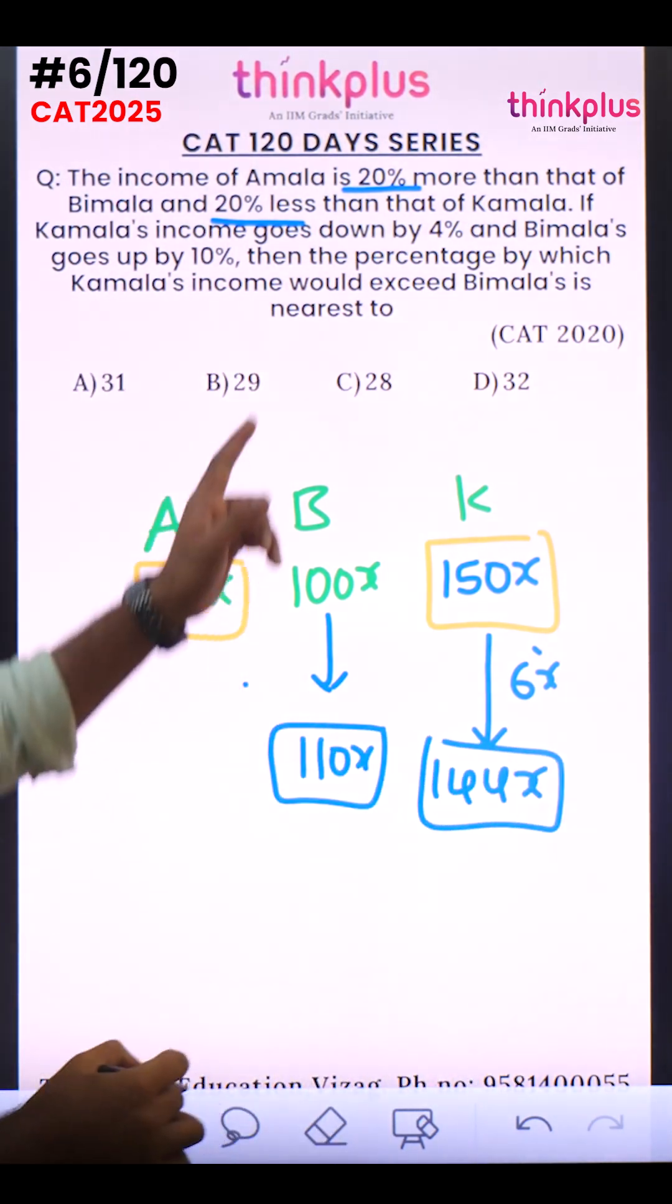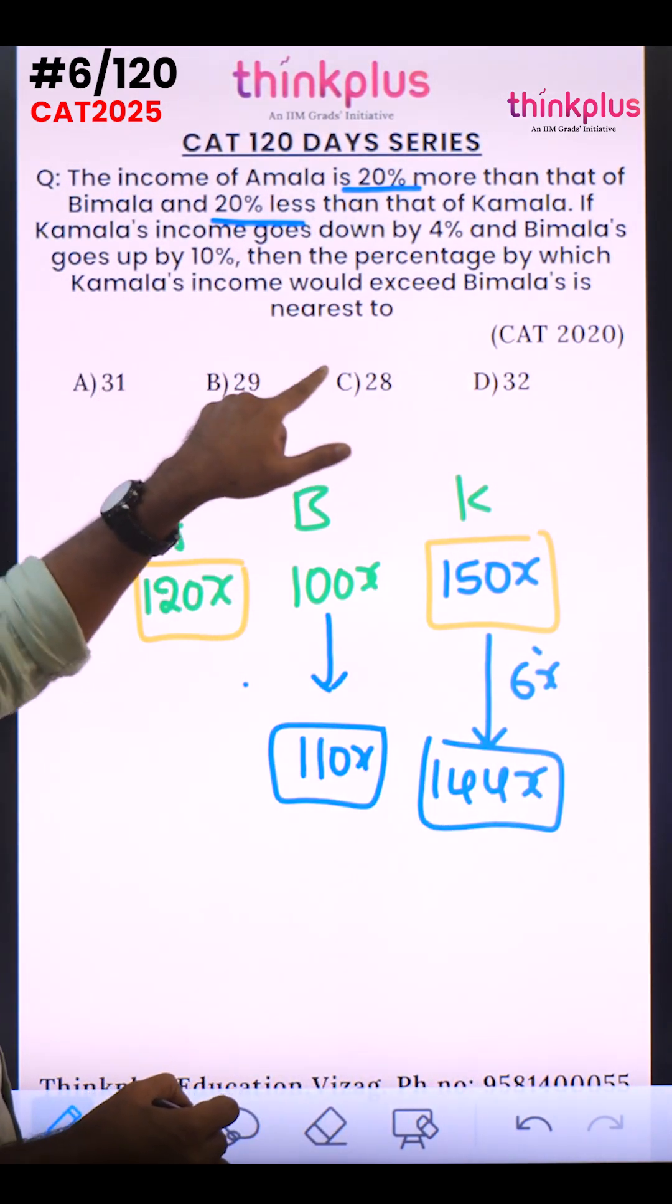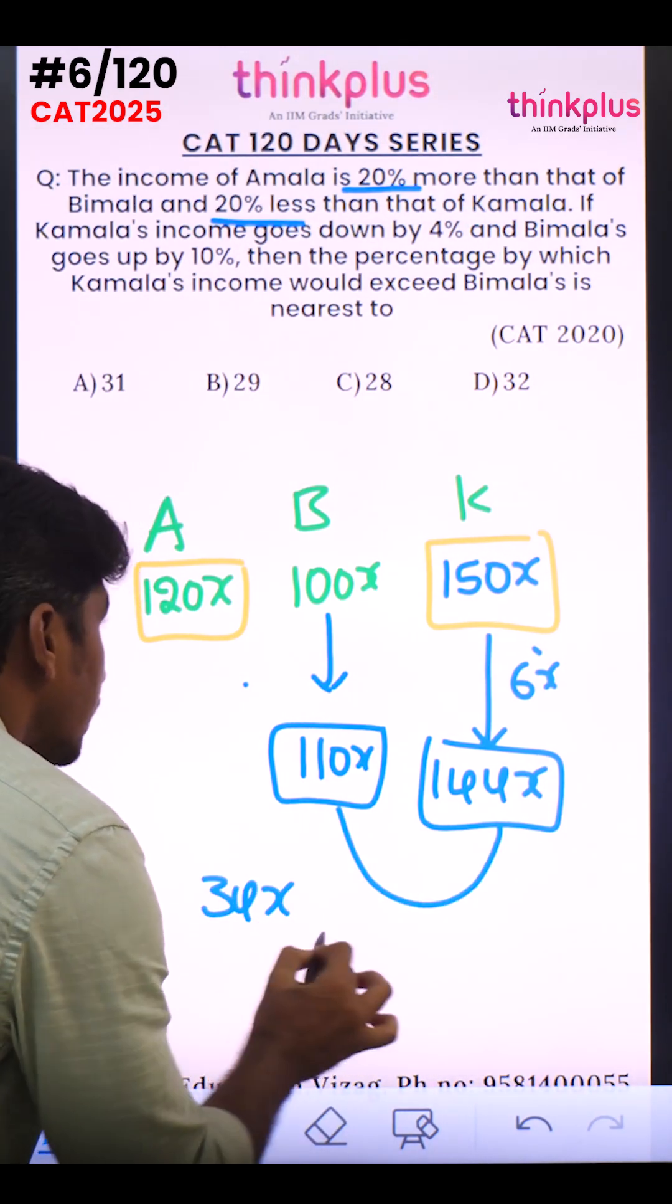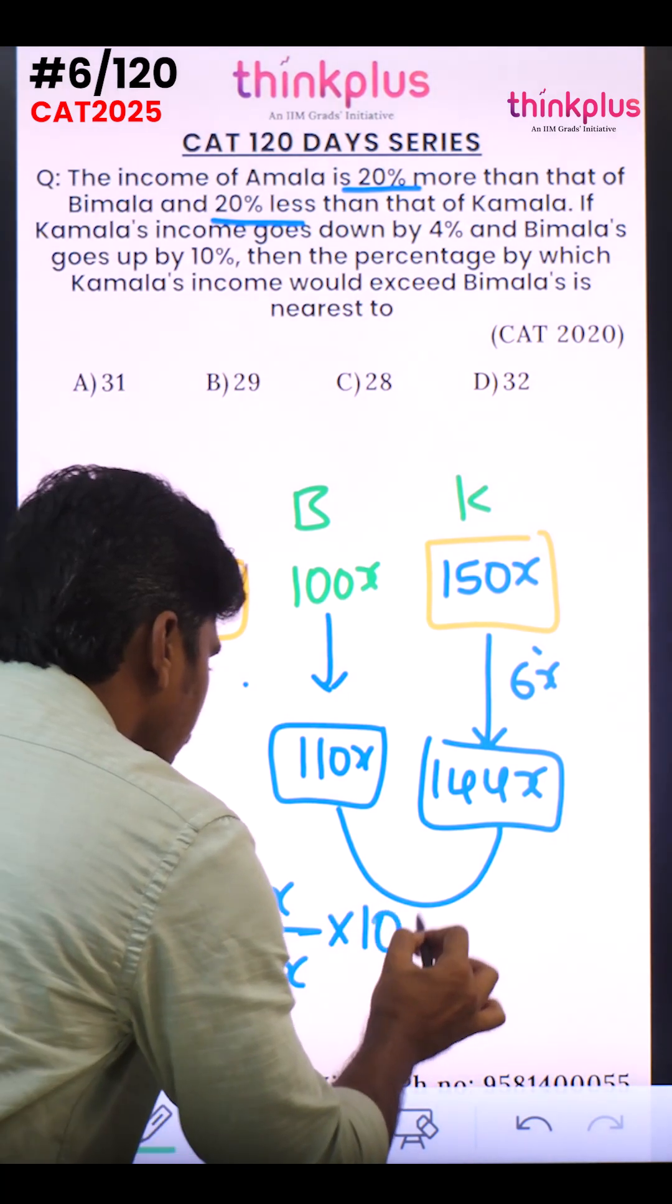Now the question is the percentage by which Kamala's income would exceed Beamla. So 144 exceeds 110 by how much? 34x divided by Beamla means 110x into 100.